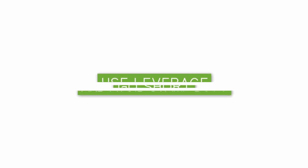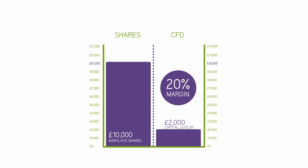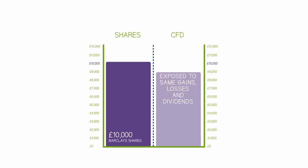Let's assume you want to buy £10,000 worth of Barclays shares using a CFD. In this example, to gain exposure to £10,000 worth of Barclays shares, you part with only £2,000. This means that Barclays is available on a 20% margin. You are exposed to the same gains, losses and dividends as if you held £10,000 worth of the conventional shares.